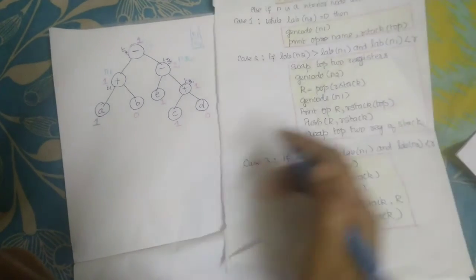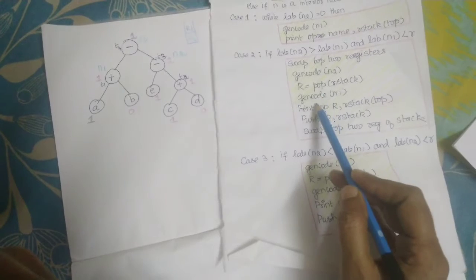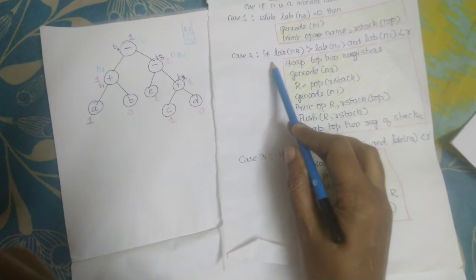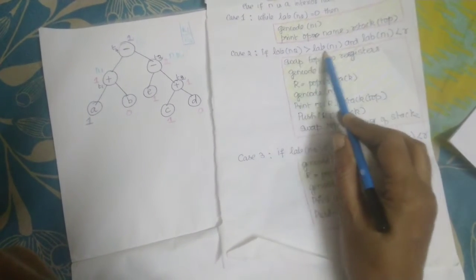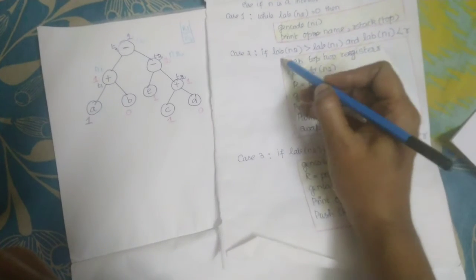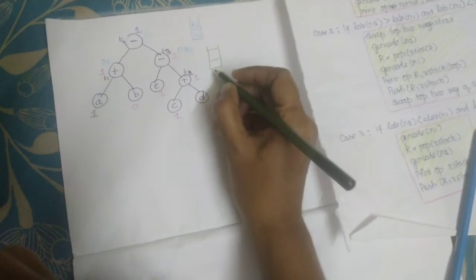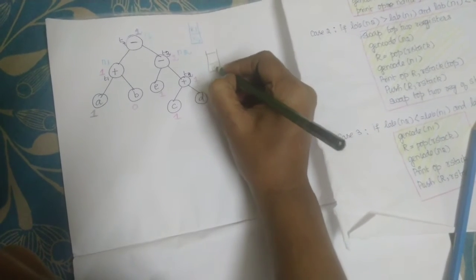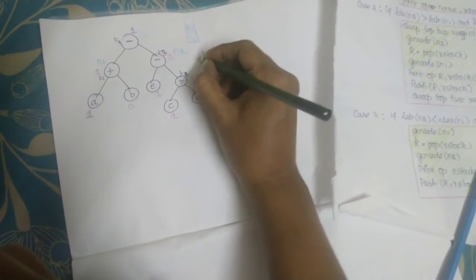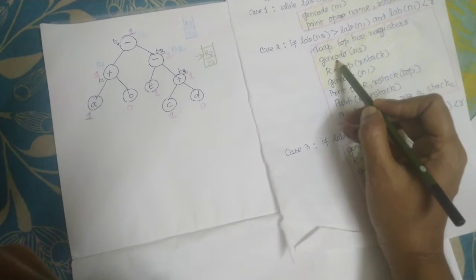For the first gen code call, it belongs to case 2. Please read out case 2 to understand. The first thing you have to do is swap the two registers. In the stack you have two registers, and while swapping, r0 will be the top of the stack and r1 will be below it. After completing the swap, the next step is to go to gen code of n2.